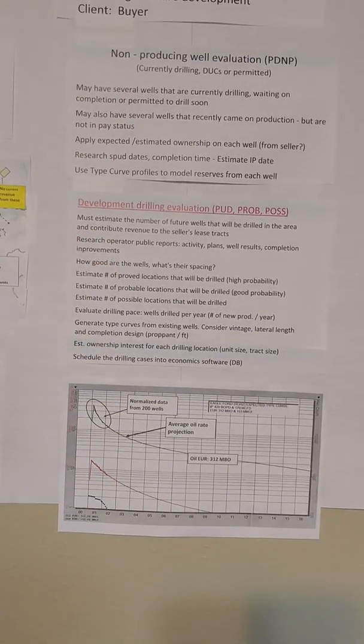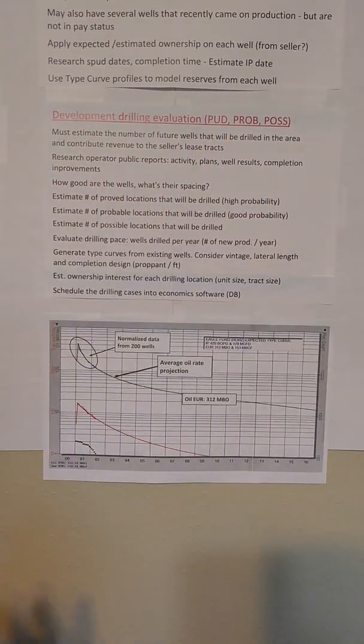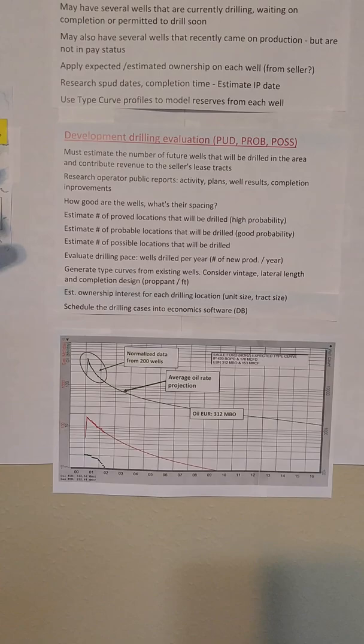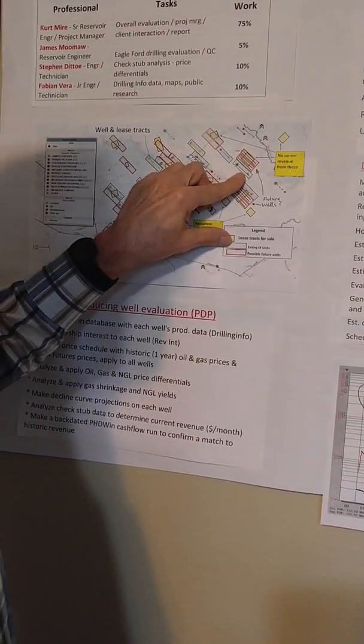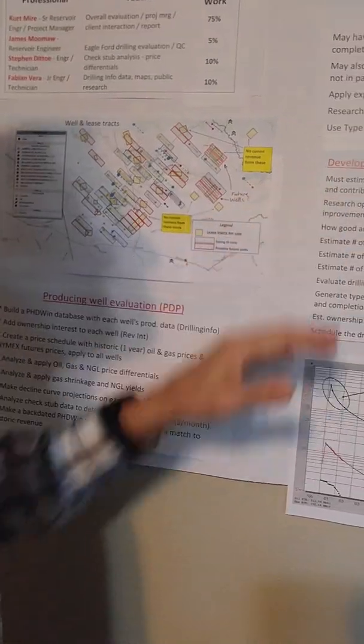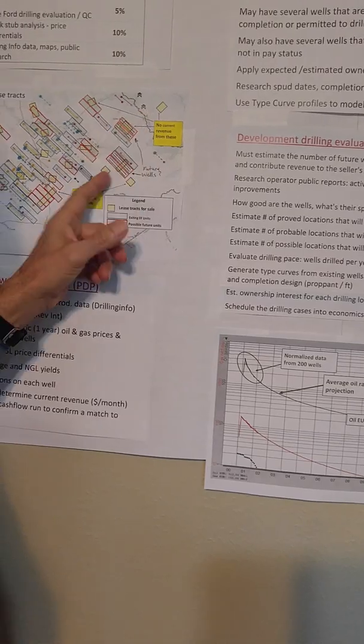The big part of the evaluation is the development drilling, where we have to estimate the PUD, probable, and possible future locations. We have to look at all the tracts and lay out where wells could be drilled—the spacing and how many wells could be drilled. We have to estimate the future amount of wells that can be drilled that will contribute to this seller's acreage.